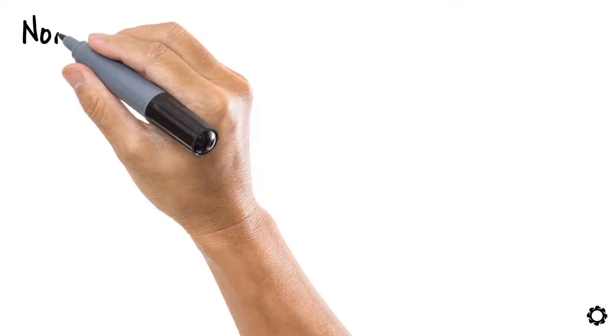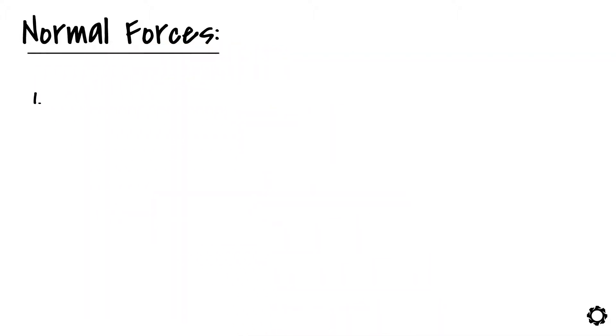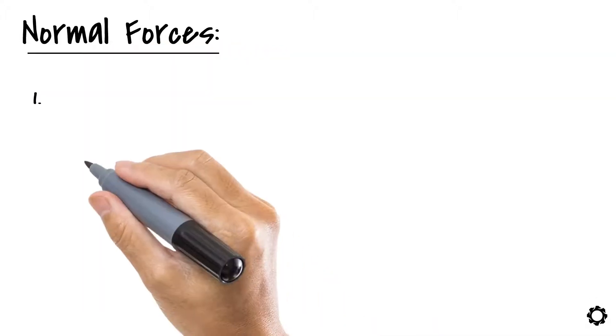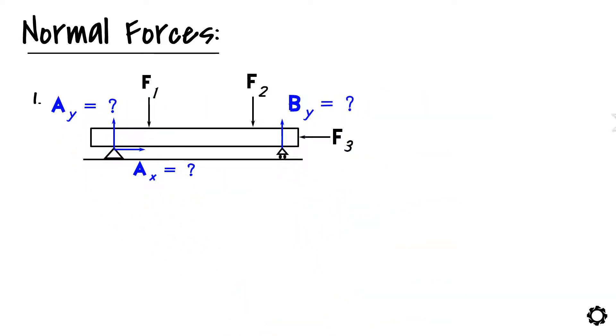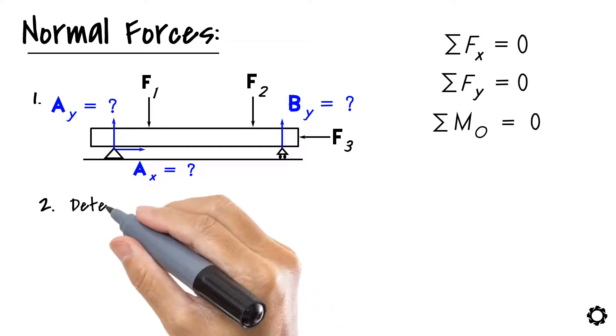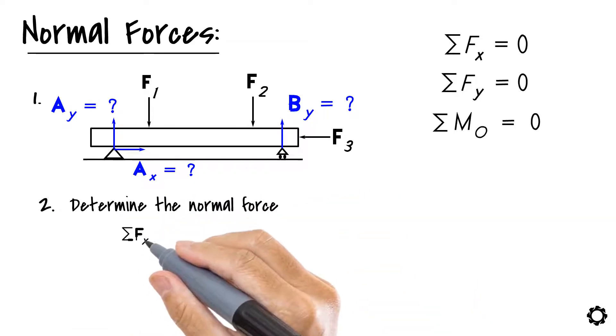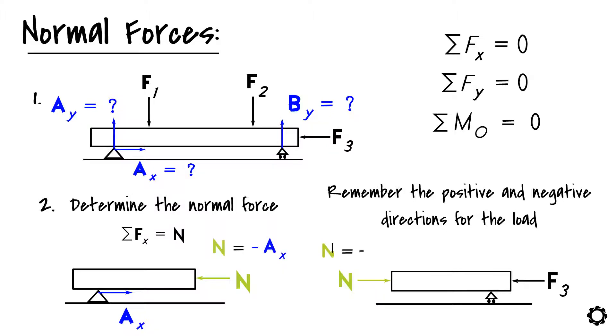Let's start from the normal forces. The first step for solving the normal forces in one section of the structure is to draw the free body diagram of the whole structure and to solve the support reactions by using equations of equilibrium. After you have done this, you are able to determine the normal force by summing the horizontal loads on one side of the section of the structure. Just remember the positive and negative directions for the load. For instance, here the magnitude of the normal force is negative because the external forces cause compression with the structure.